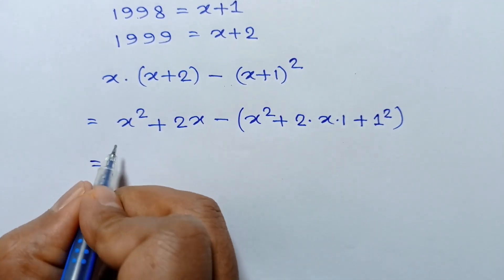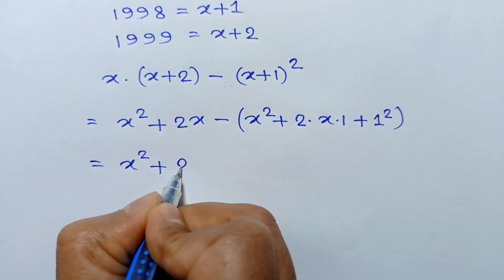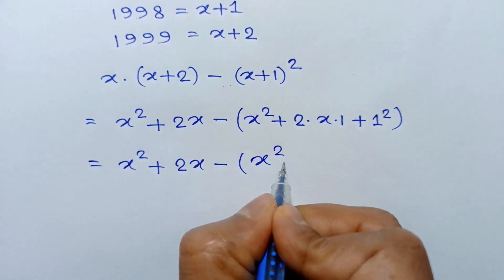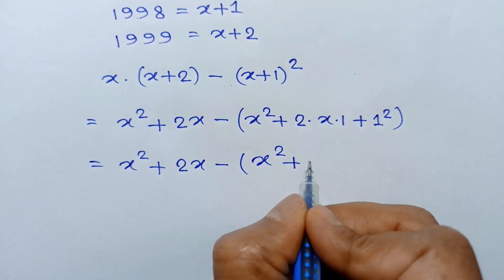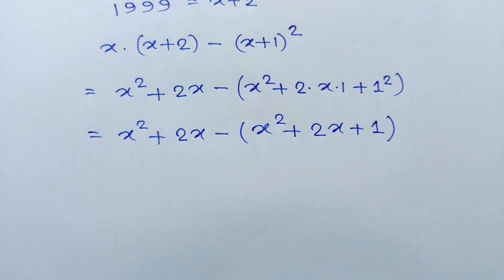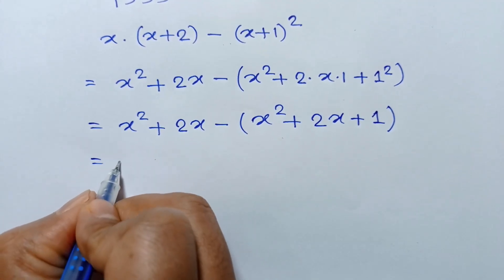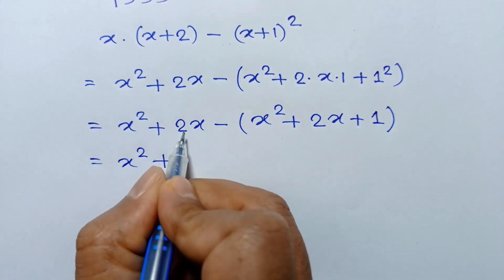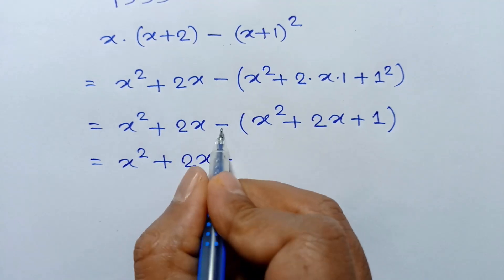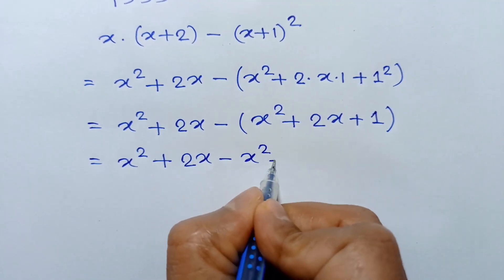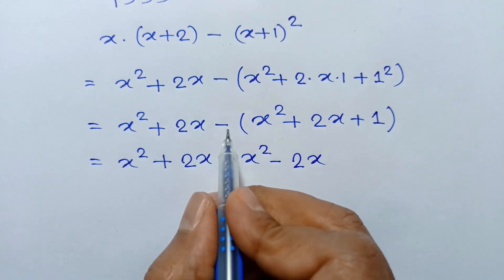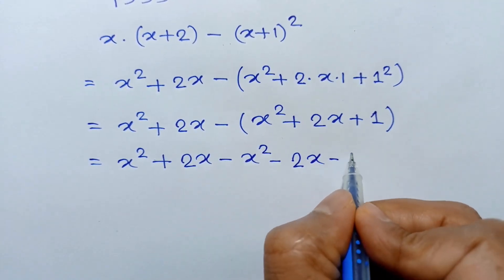So we have x squared plus 2x minus the expansion of (x plus 1) squared, which is x squared plus 2x plus 1. Multiplying through by the negative, this becomes negative x squared minus 2x minus 1.